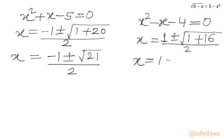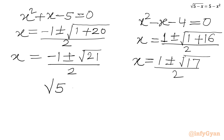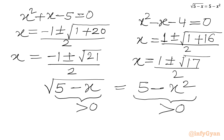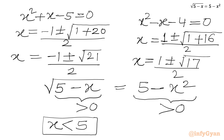So we have four solutions. Now we have to check which solutions to reject based on our radical equation. Writing the equation as √(5 minus x) equals 5 minus x², the radicand (5 minus x) must be greater than or equal to 0, so x must be less than 5. Also the RHS must be non-negative, so x must lie in the interval minus √5 to plus √5.